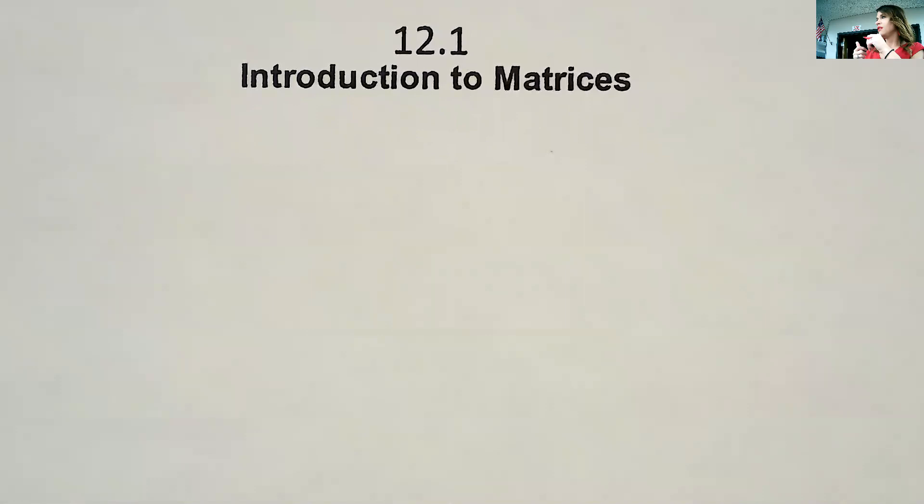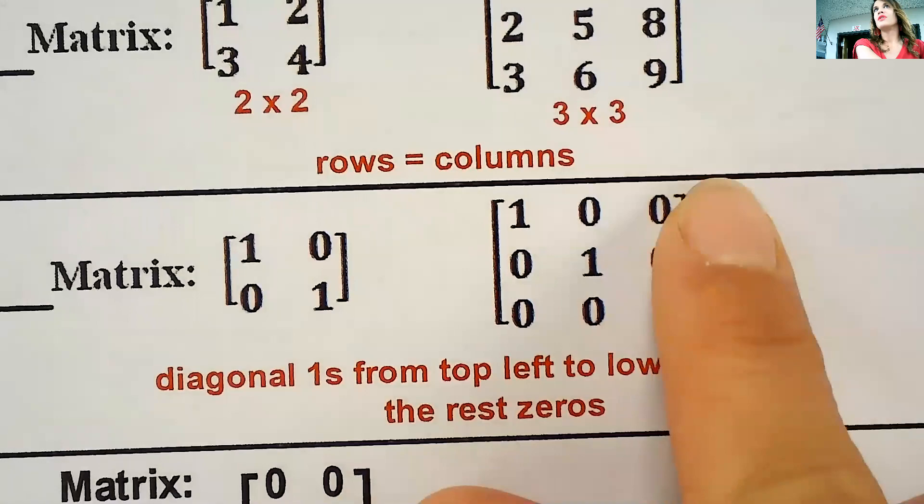And then we would use the reduced row echelon form on the calculator and it would give us an answer. You would see a matrix that looked like this and then you would have your solution to the system on this side. We used matrices to solve systems of equations without even knowing what a matrix was.